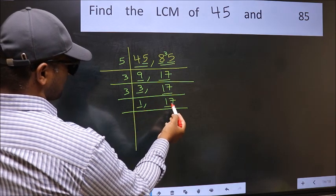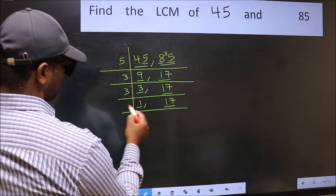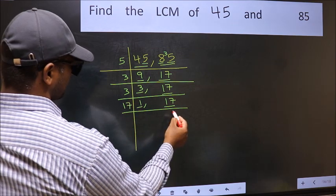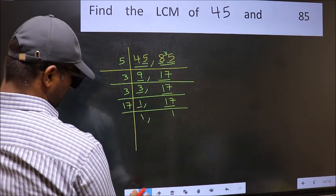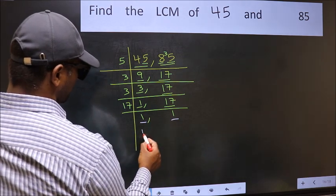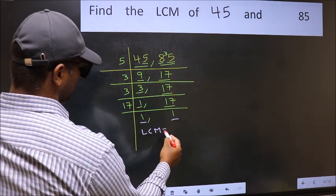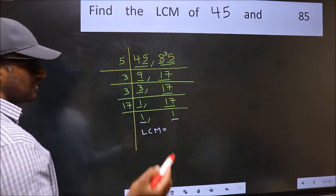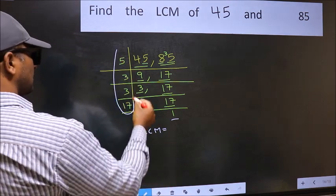So focus on the next number 17. 17 is a prime number, so 17 times 1 is 17. So we got 1 in both the places. So our LCM is the product of these numbers.